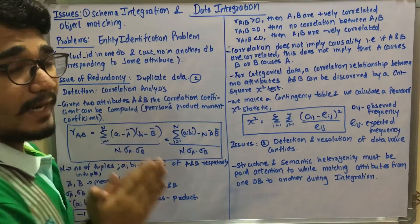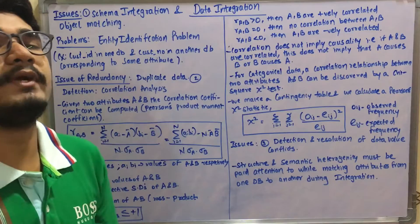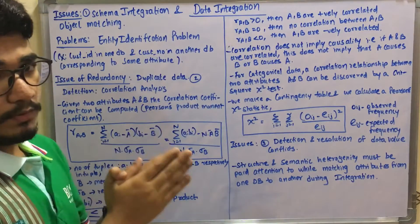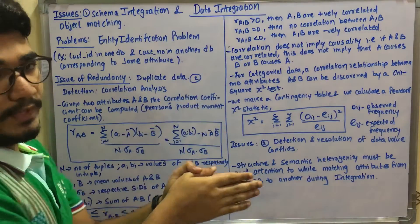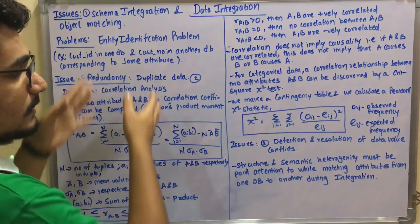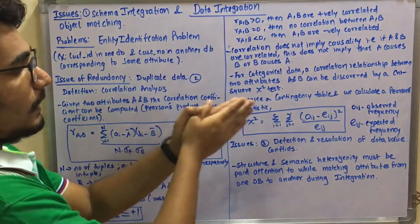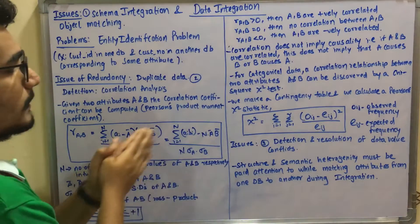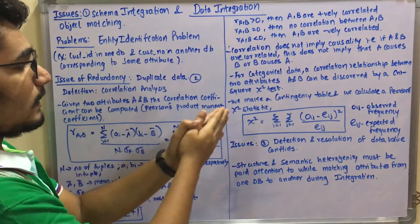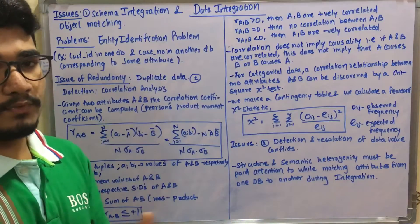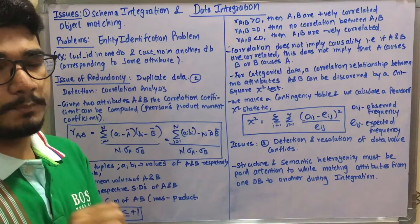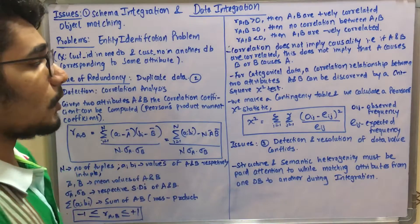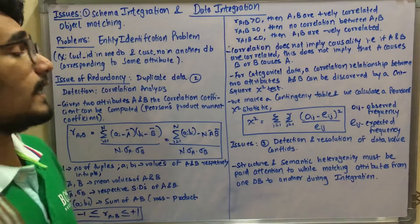For categorical data from different data mining sites, you have correlation between them to estimate between two variables A and B. This doesn't work the same way - you can do a chi-square test, Karl Pearson's chi-square test. You make a contingency table for which item has the most frequent values.